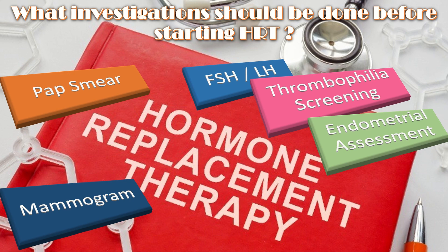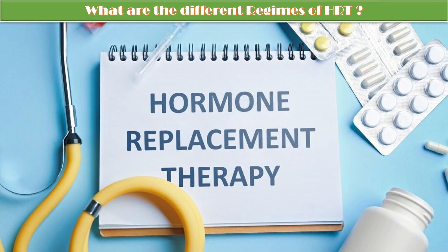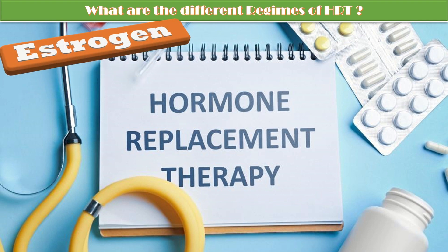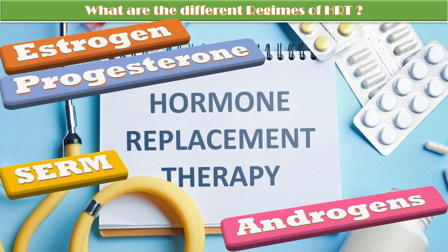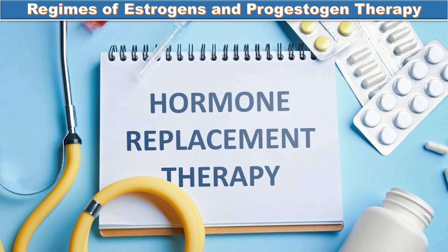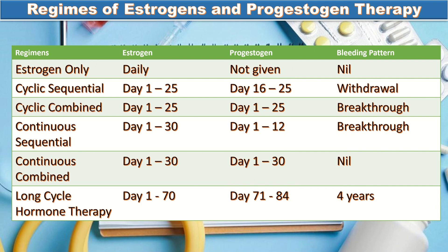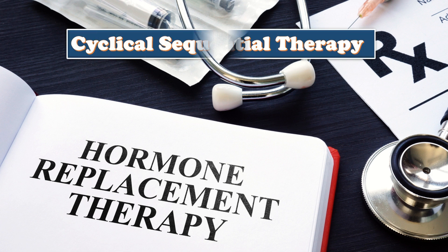What are the different regimens of menopausal hormone replacement therapy and how to choose the correct regimen? HRT consists of estrogen, progestogen, selective estrogen receptor modulators, and androgens. The regimens of estrogen and progestogen therapy include estrogen-only, cyclic sequential, cyclic combined, continuous sequential, continuous combined, and long-cycle hormone therapy.